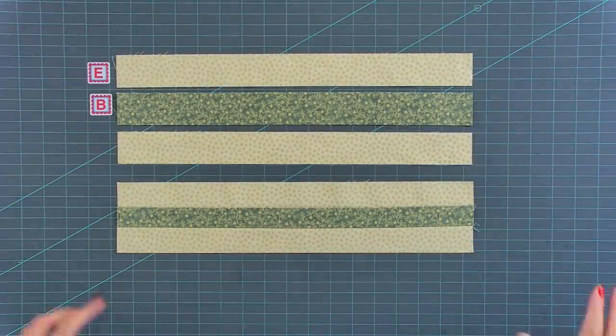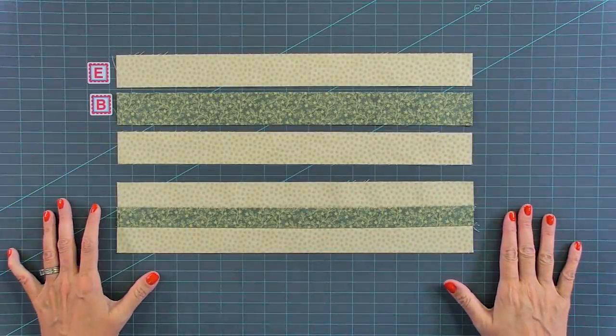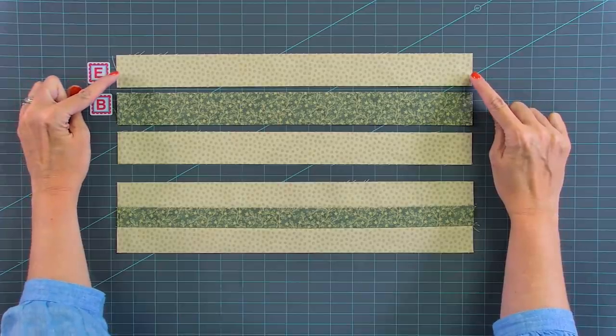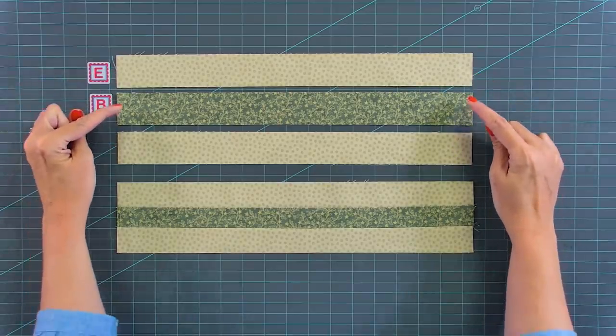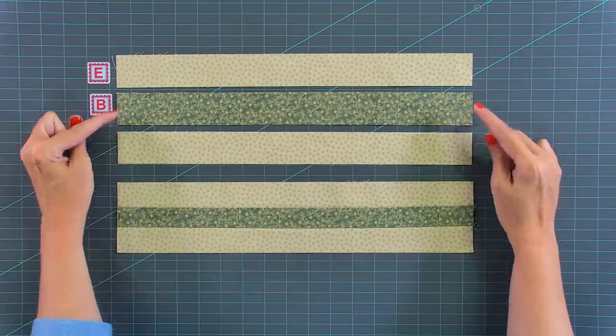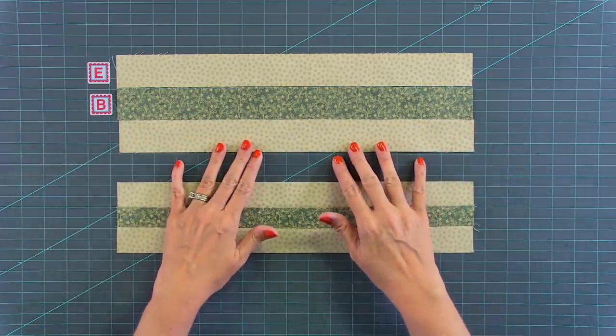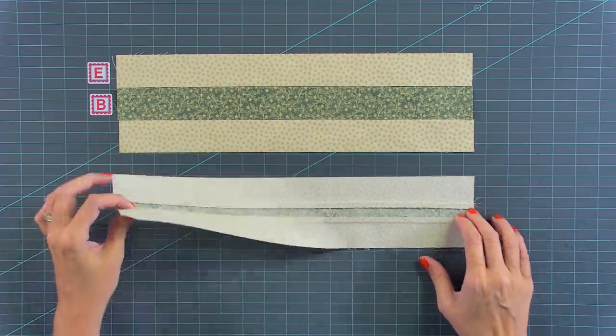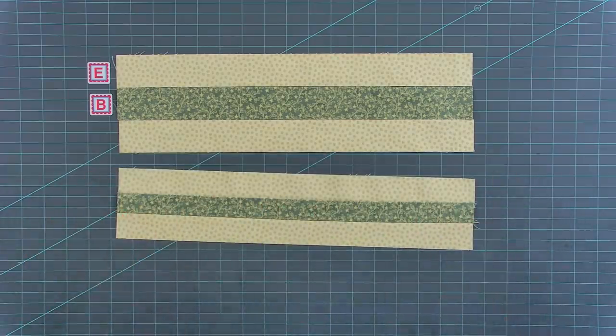Now that we've made our half square triangles, we're going to move on to our nine patches. To make our first part, you're going to assemble a fabric E rectangle to a fabric B rectangle. You're going to use a quarter inch seam and then you're going to press this one towards the green and you're going to make one of these strip sets.